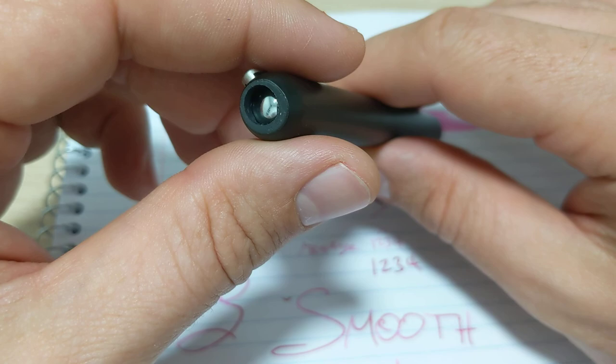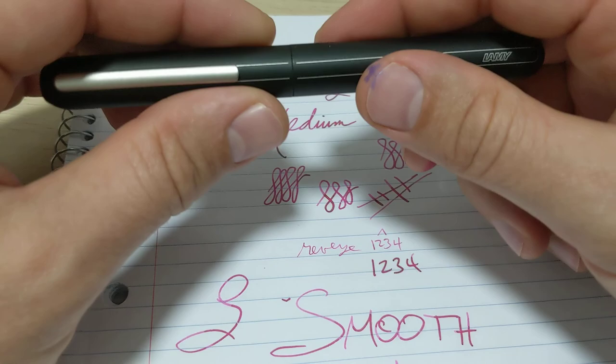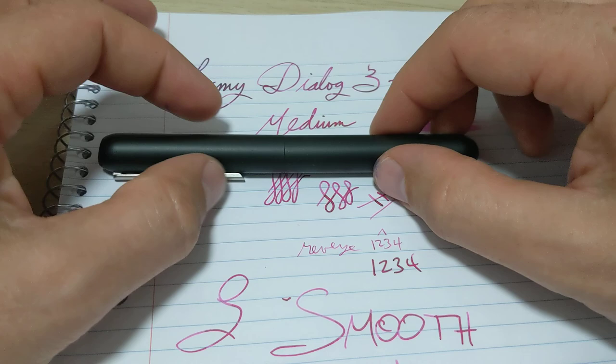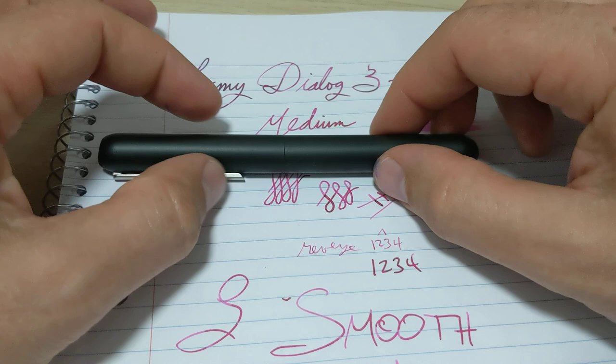Some pens you can leave inked for a month and then pop the cap off and it just writes right away, no problem. This one will take a couple little goes to get it going. But again if you put a nice wet ink in it I'm sure it helps better than some other ones too. Anyhow just thought I'd show it to you. Maybe you learned something. Leave a comment if you got questions, I'll do my best to answer them.